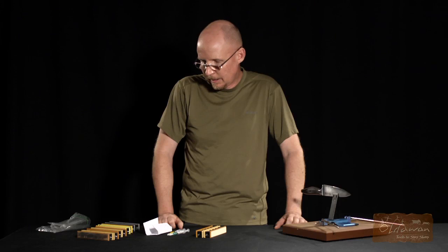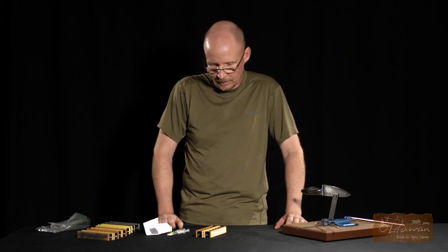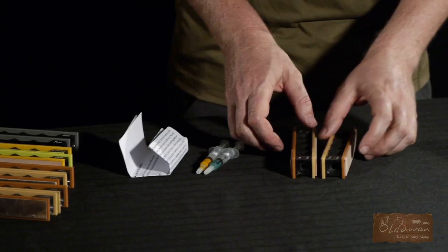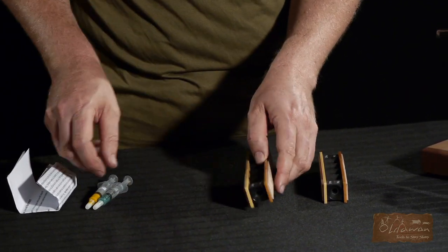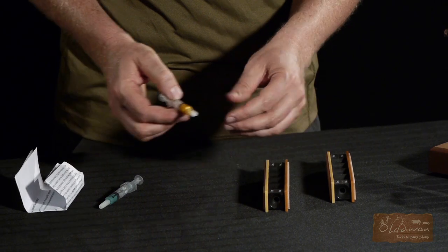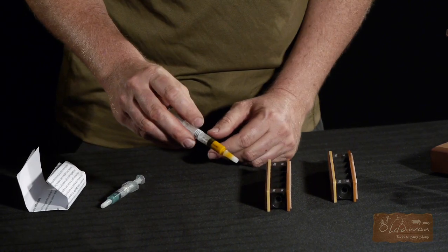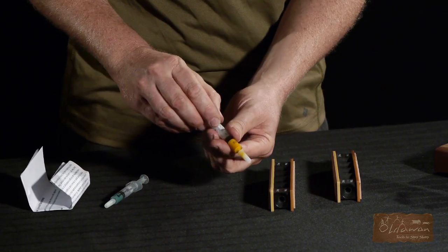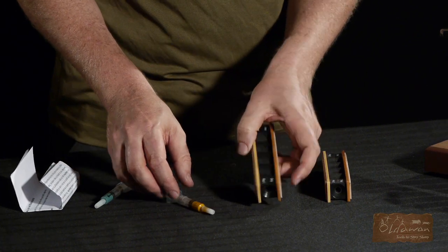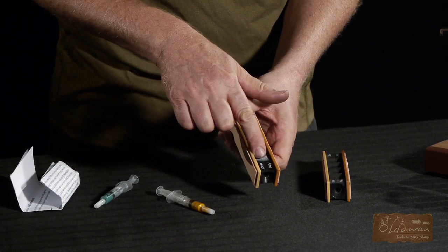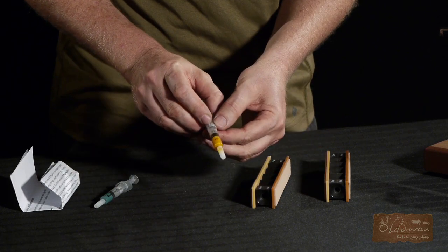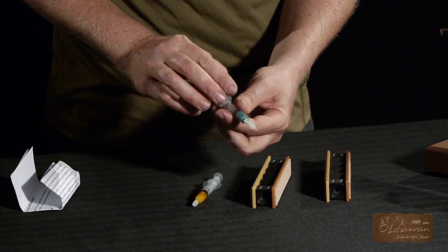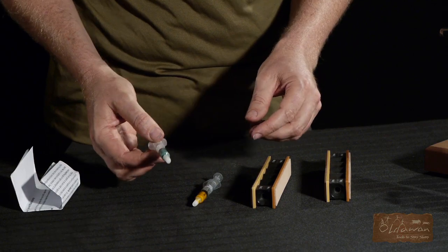Let's first talk about the way that the strops come out of the package. They're going to come blank with no grit on them at all on either side. With the standard Wicked Edge, if they're included with the paste, the paste is going to come in a syringe and all the syringes will be labeled with the grit size as will the handles. In this case we've got a 5 micron and a 3.5 micron, and this happens to be the 5 micron paste.